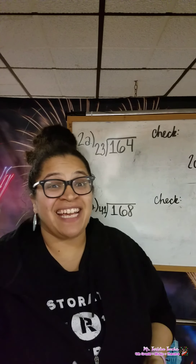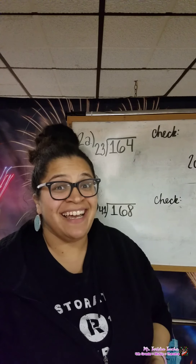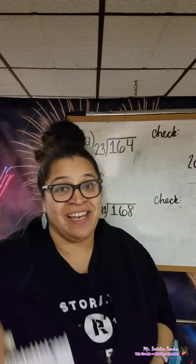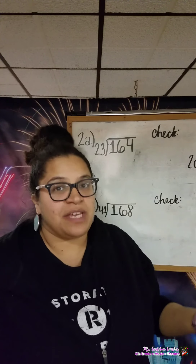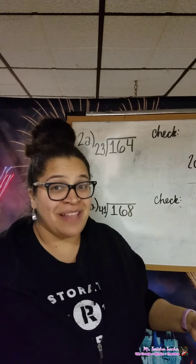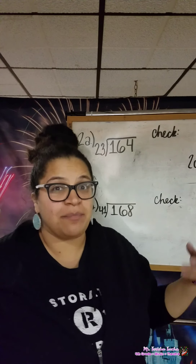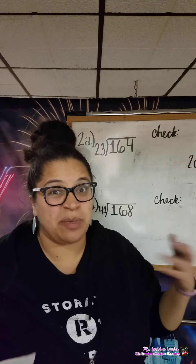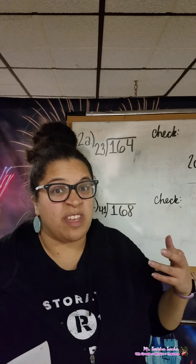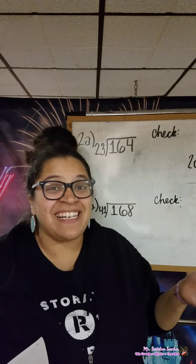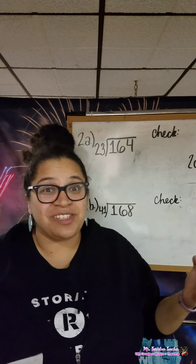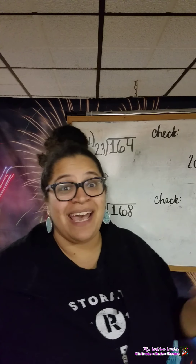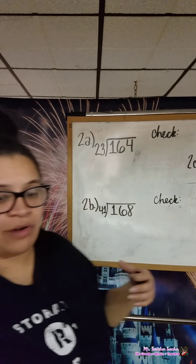Alright scholars, so we are doing some dividing and checking. We want to remember to put the correct number in the quotient. When we estimate, sometimes we get a number and then go to multiply it and realize it's too big. That's an easy fix — if you get a number that's too big, just reduce the number in the quotient by 1. And we'll see some of that in today's problems.